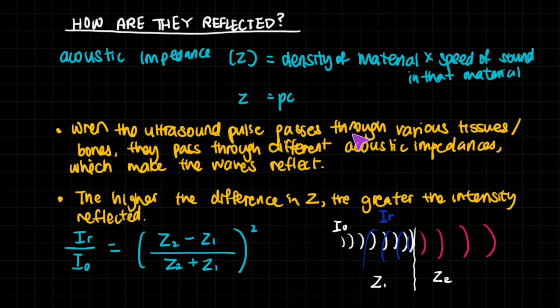When the ultrasound pulse passes through various tissues or bones, they pass through different acoustic impedances, and this makes the waves reflect. The higher the difference in Z values, the greater the intensity reflected. That means the boundaries between bone and blood will have an extremely high amount of reflection in that area. A part of it is transmitted onto the next part, a part of it is reflected.